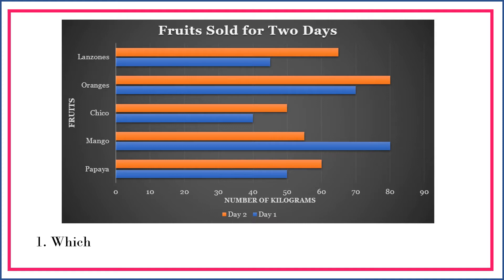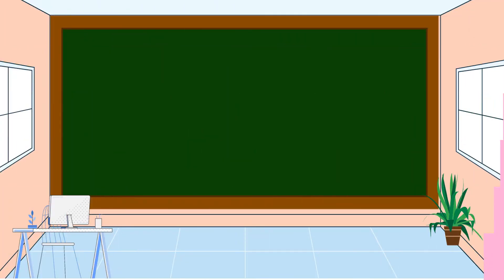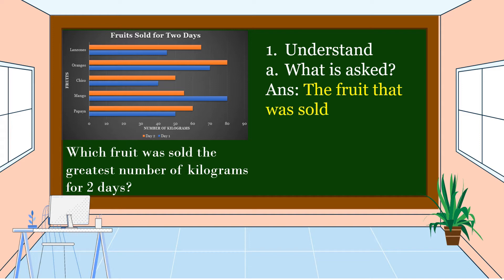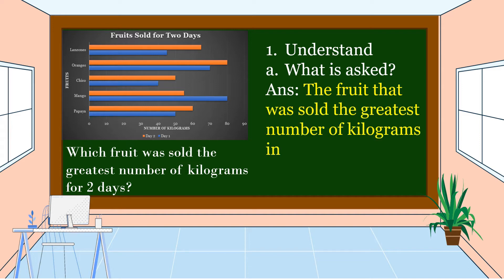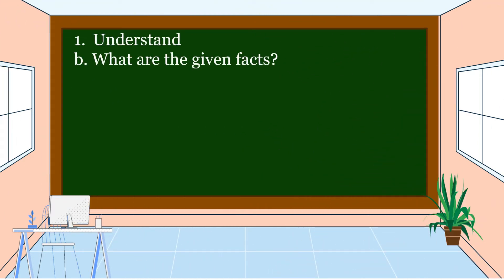This is our question: which fruit was sold the greatest number of kilograms for two days? To solve this problem, we are going to use the four-step plan. First, we should understand the problem — we should know what is asked. This problem is asking for the fruit that was sold the greatest number of kilograms in two days. Next, we should also know what are the given facts.